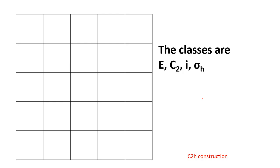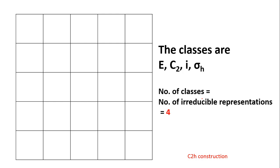According to the Great Orthogonality Theorem, the number of classes is equal to the number of irreducible representations. Since there are four classes, there will be four irreducible representations. The classes are represented in the top row and the irreducible representations are represented on the left side, labeled 1, 2, 3, and 4.